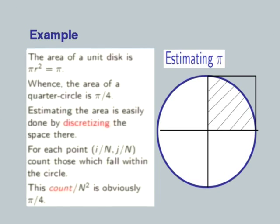We start with an example: estimating the value of pi. Pi is related to circular shapes; the area of a circle is pi r squared. For a unit disk with radius one, the area is exactly pi. The area of a quarter circle is pi by 4, shown as a shaded region. We look at a quarter circle because by symmetry, four quarter circles are equivalent, so estimating one applies to the whole circle.